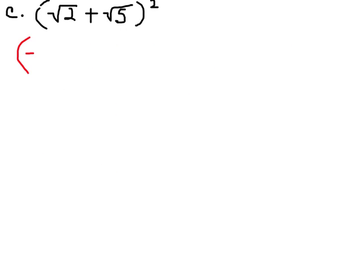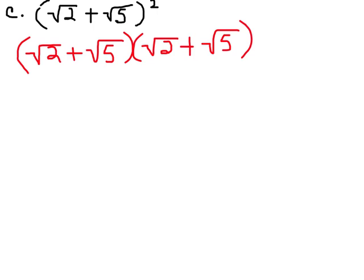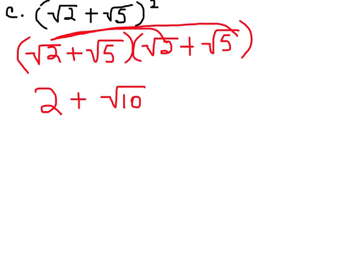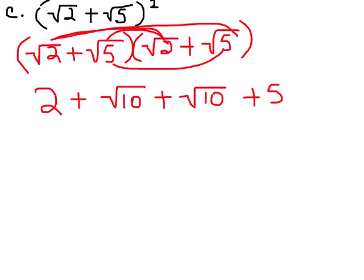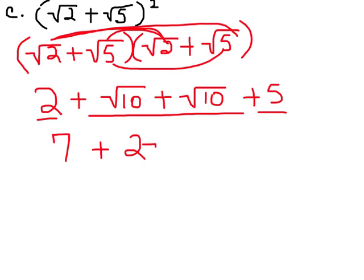So this is square root of 2 plus square root of 5, and that is squared. We're going to write it out in long form. First times first: the square root of 2 times the square root of 2 is 2. Outside times outside: square root of 2 times the square root of 5 is square root of 10. And then inside times inside is also square root of 10. And last: the square root of 5 times the square root of 5 is just 5. We can combine the first and last terms: 2 plus 5 is 7. And the two middle terms: square root of 10 plus square root of 10 is 2 square root of 10.